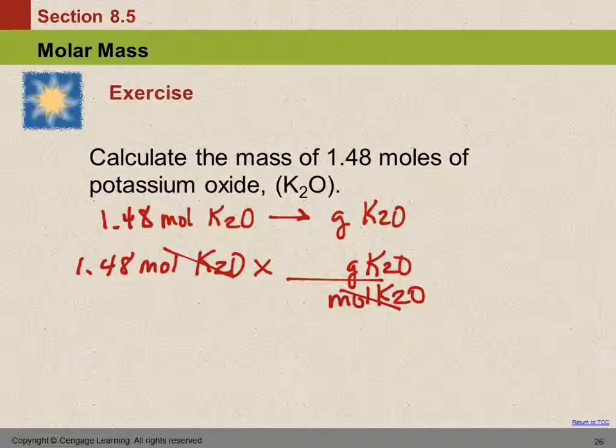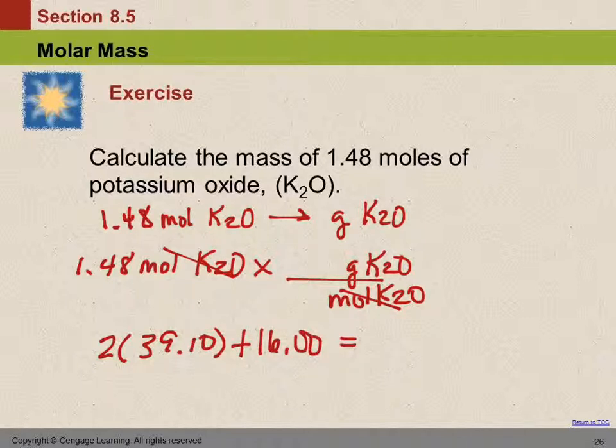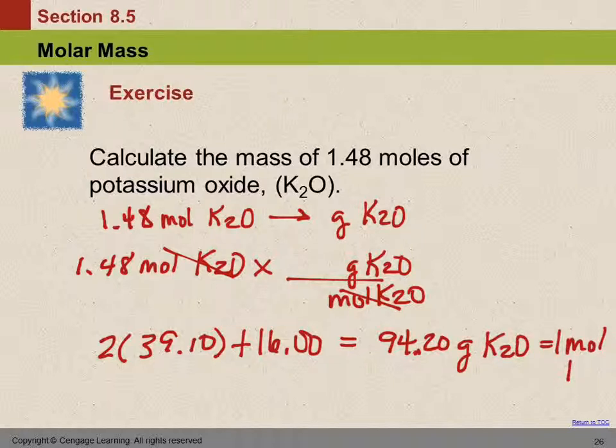So we've got K2O. That means we need 2 times the mass of potassium, which is 39.10, plus the mass of oxygen. 2 times 39.1 plus 16 equals 94.2. So 94.2 grams of K2O is equal to 1 mole of K2O.